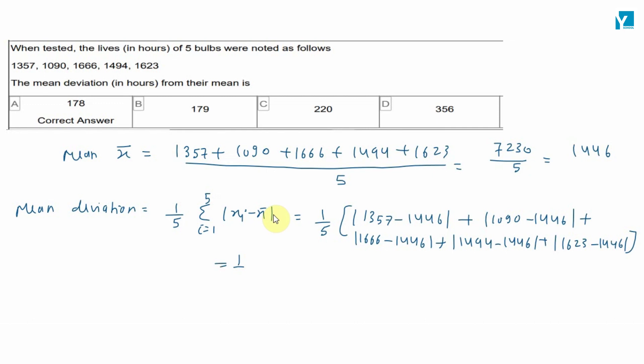Let's solve this. 1 upon 5, this gives 89, plus 356, plus 220, plus 48, plus 177. Add all of these, this becomes 890 divided by 5.